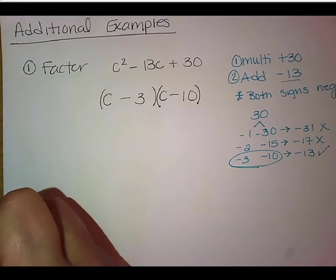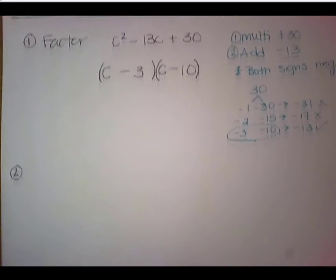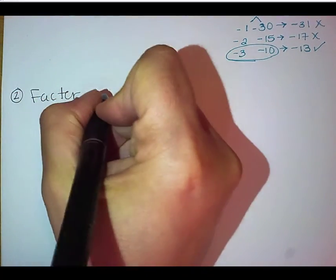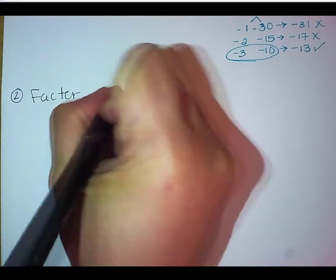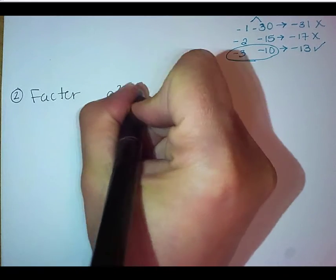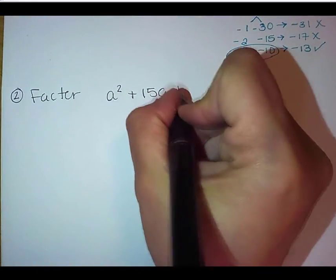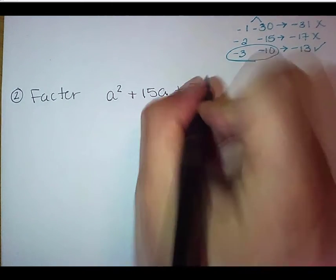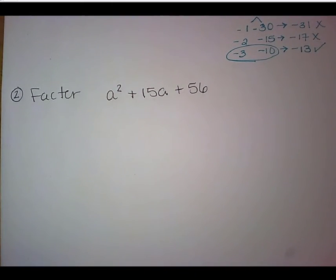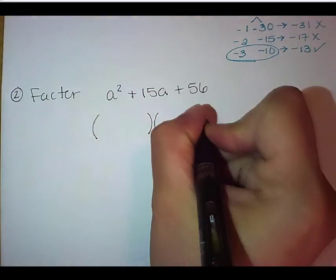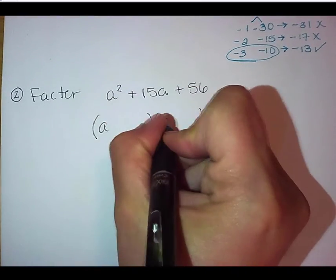All right, so for our second example that we're going to do here, we're going to factor A² plus 15A plus 56. This is kind of one of our larger numbers that we've worked with so far, but we are going to figure it out. So again, we can start by doing our parentheses. We know we're going to lead off with A for both of those.